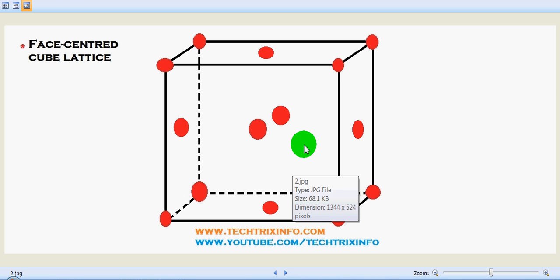Aluminum, copper, nickel and most ductile metals have this type of structure.